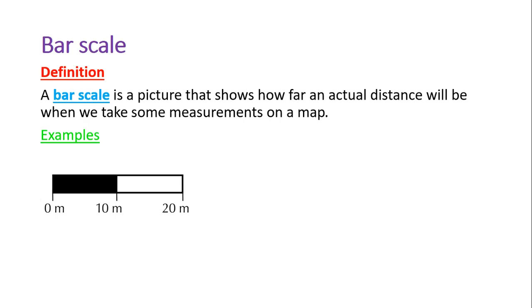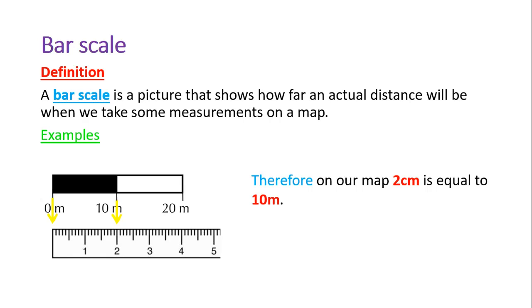Whenever we have a bar scale, we have to translate it into a number scale, and that requires a few steps. First we need to take out a ruler and measure how far the zero to 10 meters on the bar scale actually is on our ruler. In this example, you can see it's 2 centimeters, and therefore we know that 2 centimeters on our map is actually 10 meters.